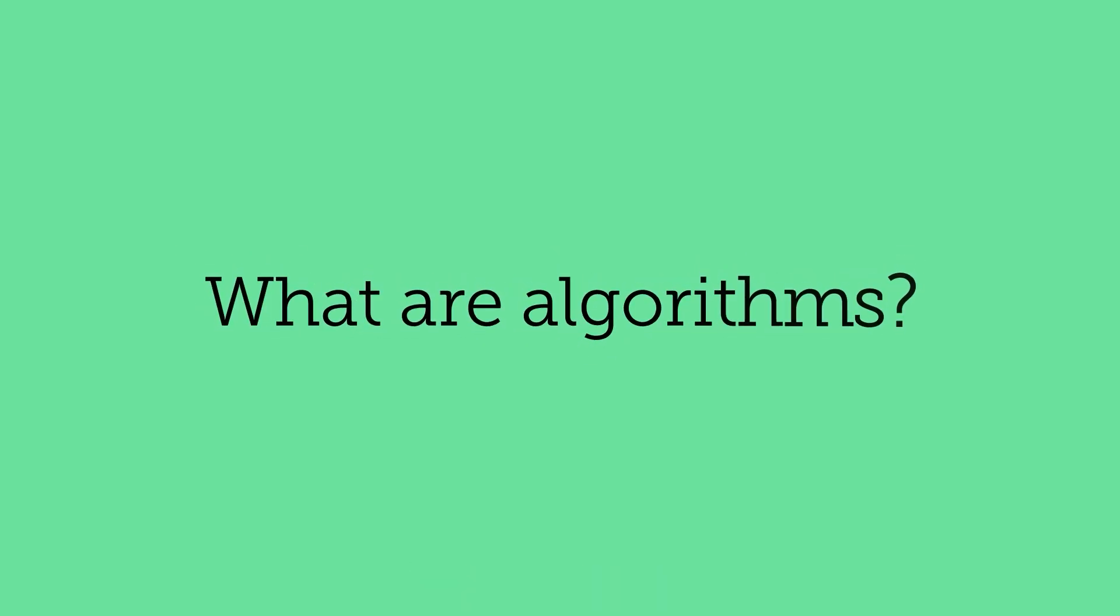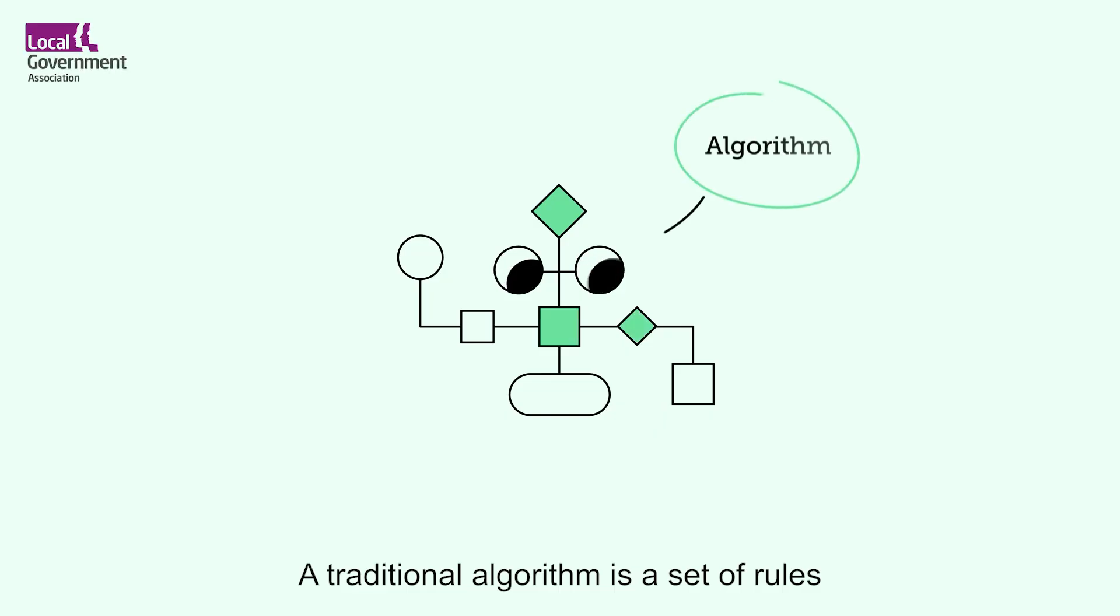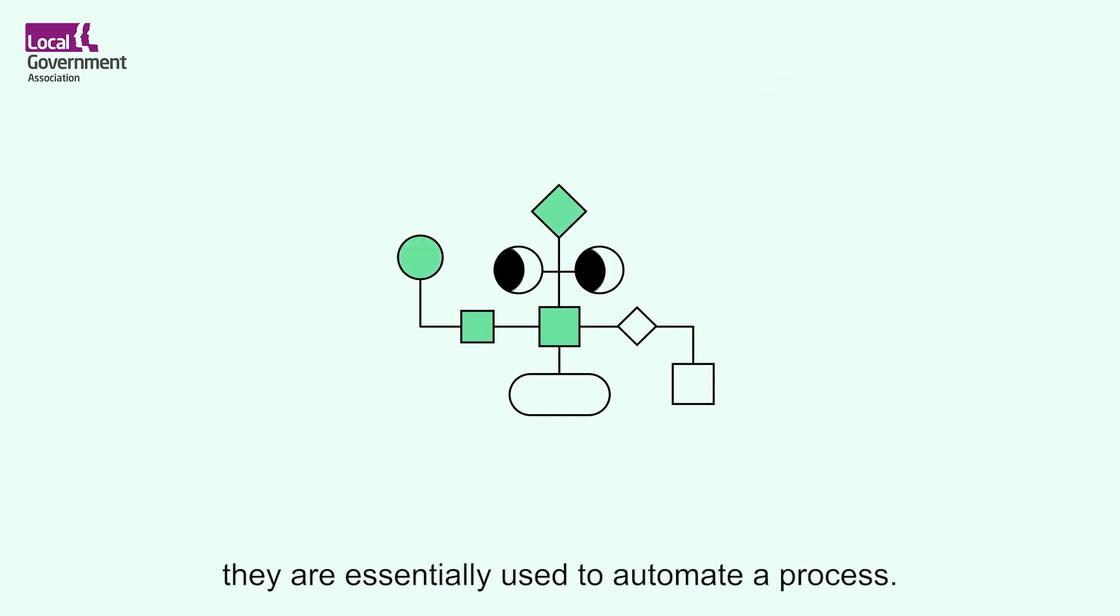What are algorithms? A traditional algorithm is a set of rules followed in an order or sequence. They are essentially used to automate a process.